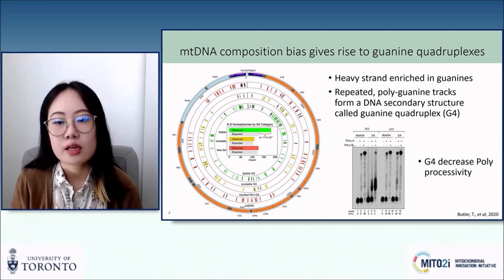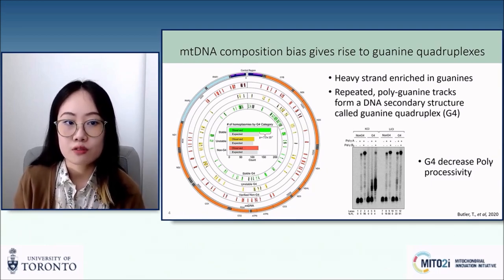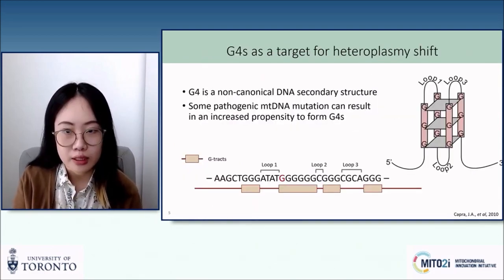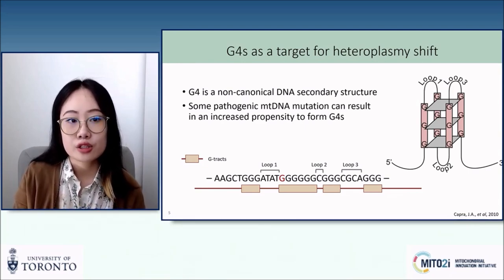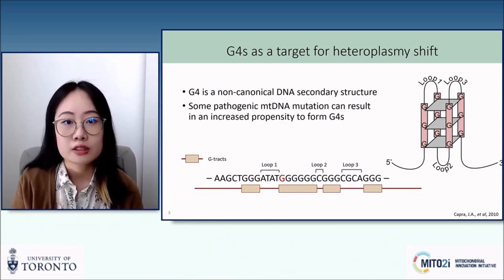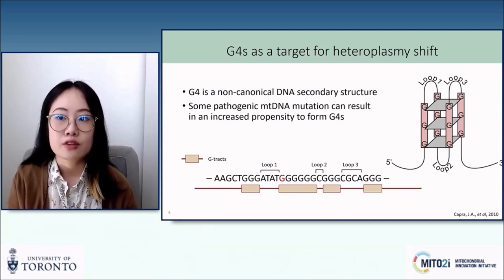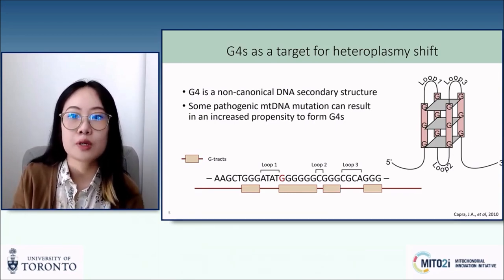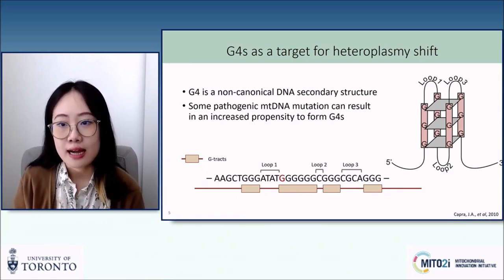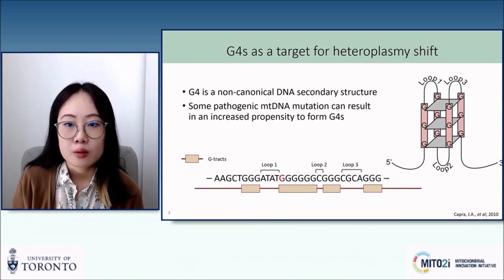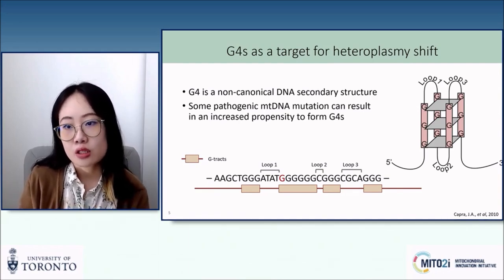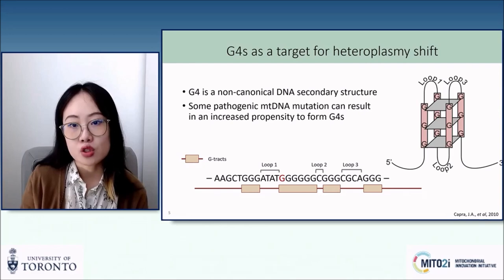This effect is abolished when the extension is carried out in lithium chloride, which disfavors G4 formation. G4 structures are a type of non-canonical DNA secondary structure where four guanines come together in the same plane to form a tetrad, with Hoogsteen base pairing as shown by the gray square in the figure on the right. Multiples of these tetrads stack together to form a quadruplex structure. G4 structures have been shown to decrease polymerase processivity, and some pathogenic mitochondrial DNA mutations result in an increased propensity for the sequence to form a G4 structure.